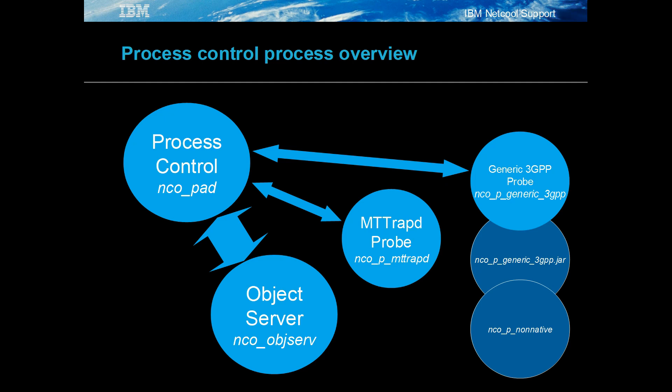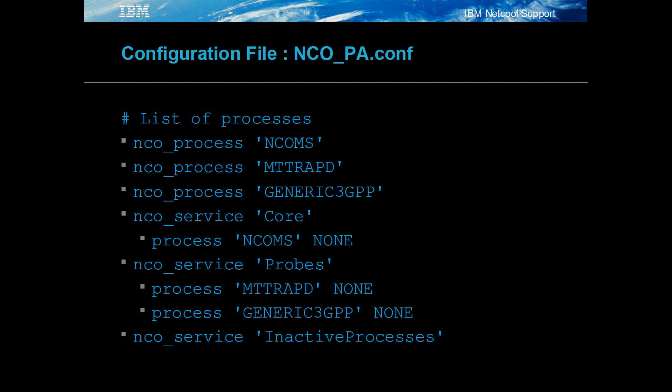Notice that the generic 3GPP probe is made up of two physical processes. The NCO_PA.conf configuration file lists individual processes first and then defines the services with the defined processes in. By default, there is an inactive processes service for placing deactivated processes in.